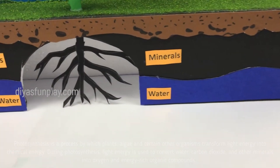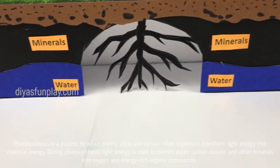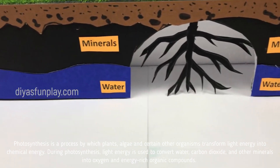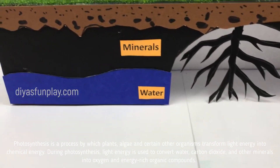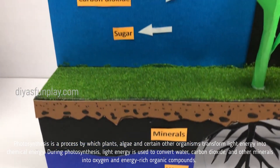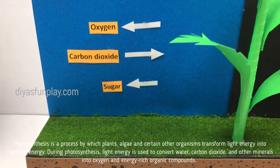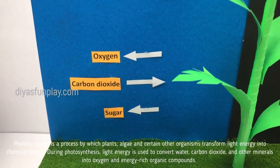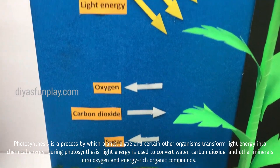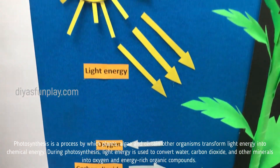Photosynthesis is a process by which plants, algae and certain other organisms transform light energy into chemical energy.